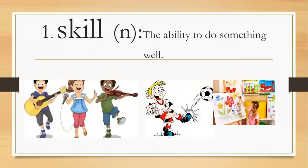Number one, skill, S-K-I-L-L, skill. It's a noun. The ability to do something well. You might have a skill of singing, playing an instrument, playing soccer, painting. You might have many skills, playing baseball, for example. That's your skill, something you're really good at.